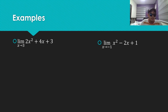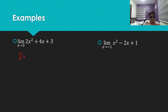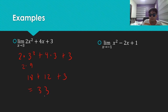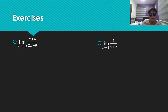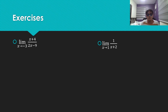Here are some examples. The first one is the limit of 2x squared plus 4x plus 3 as x goes to 3. Using substitution: 2 times 3 squared plus 4 times 3 plus 3 equals 18 plus 12 plus 3, which is 33. The second one: the limit as x goes to negative 1 of x squared minus 2x plus 1. Substituting: negative 1 squared minus 2 times negative 1 plus 1 equals 1 plus 2 plus 1, which is 4. The limit is 4.